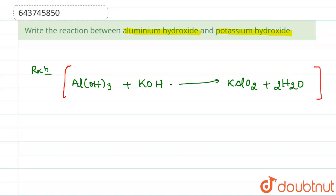Aluminum hydroxide reacts with potassium hydroxide to produce the product, potassium aluminate. So the product is potassium aluminate plus water. And here we have aluminum